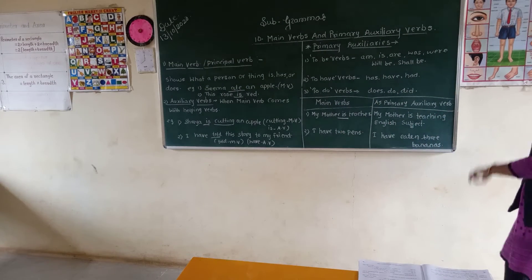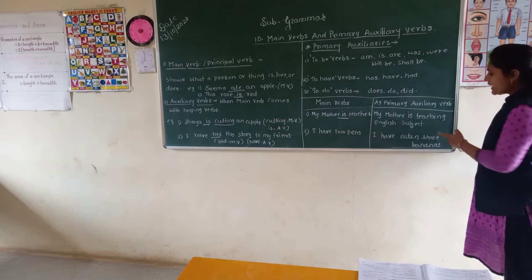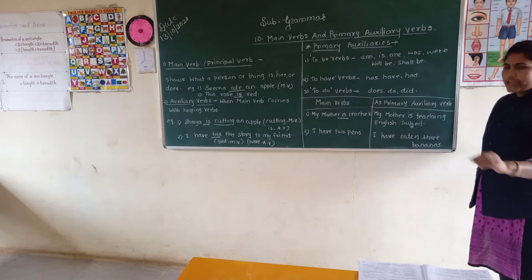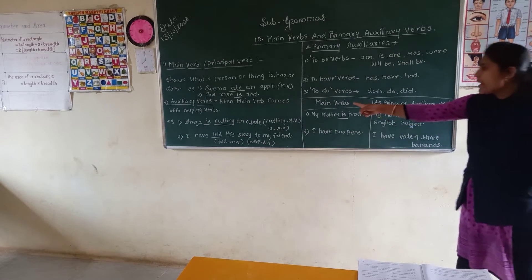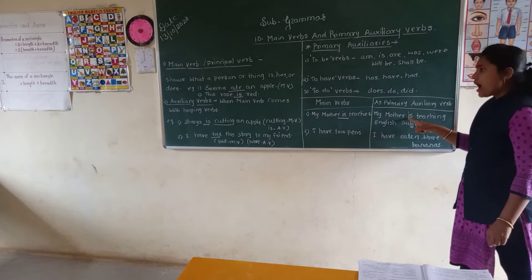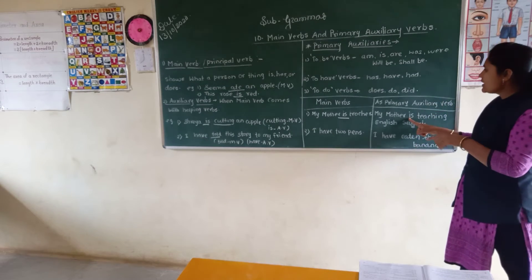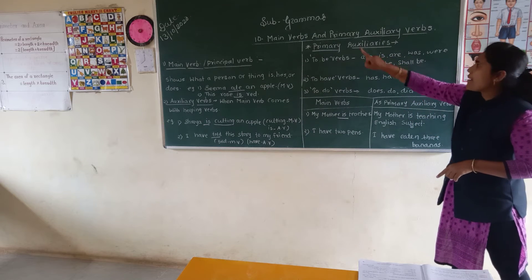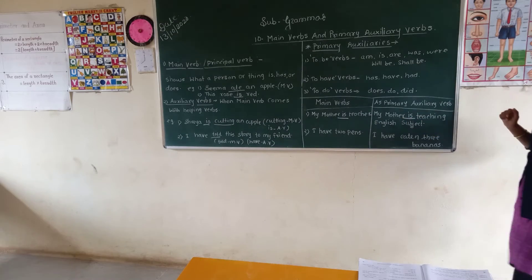Now see another sentence: 'My mother is teaching English subject.' Here, if you find the main verb, it is 'teaching.' And 'is' is the helping word. When the main verb comes with the helping verb, 'is' becomes the auxiliary verb — and since 'is' belongs to the 'to be' form, it is also a primary auxiliary verb.